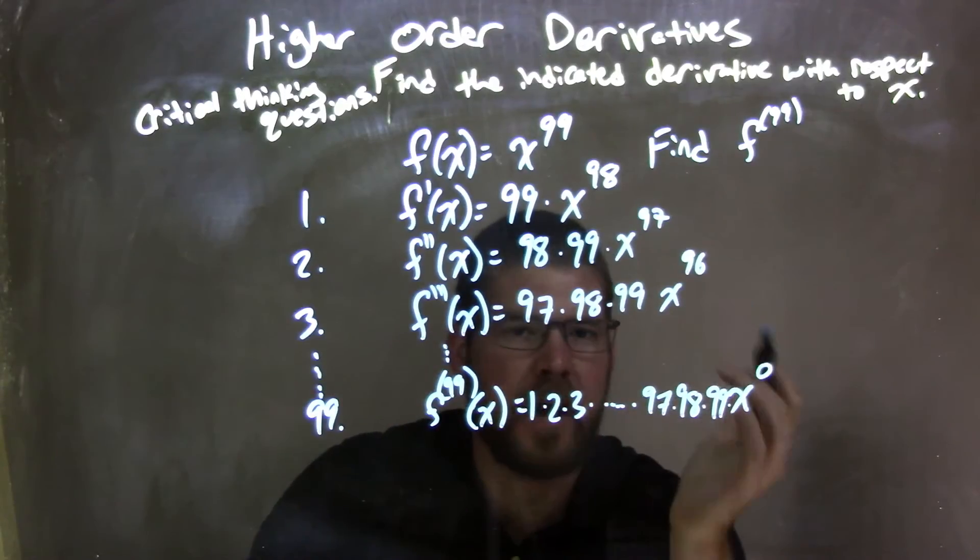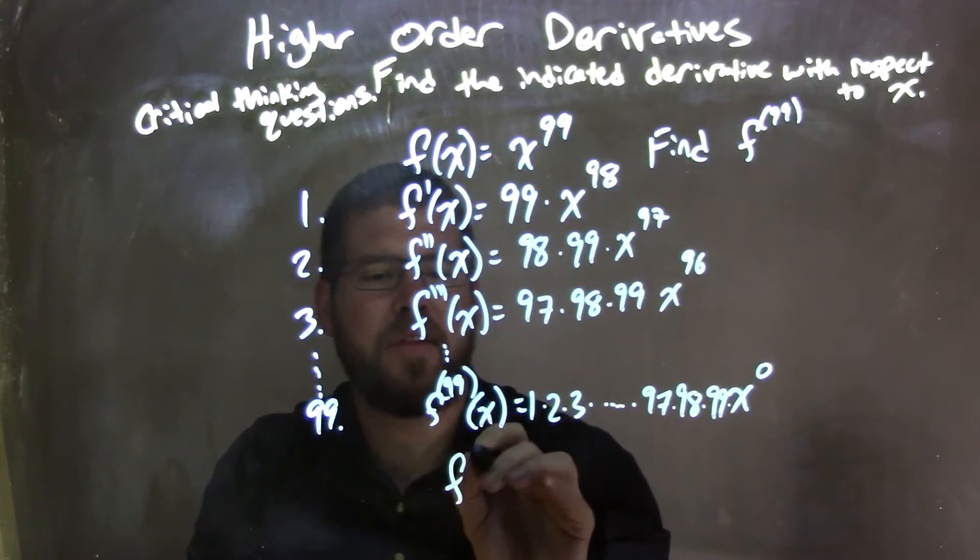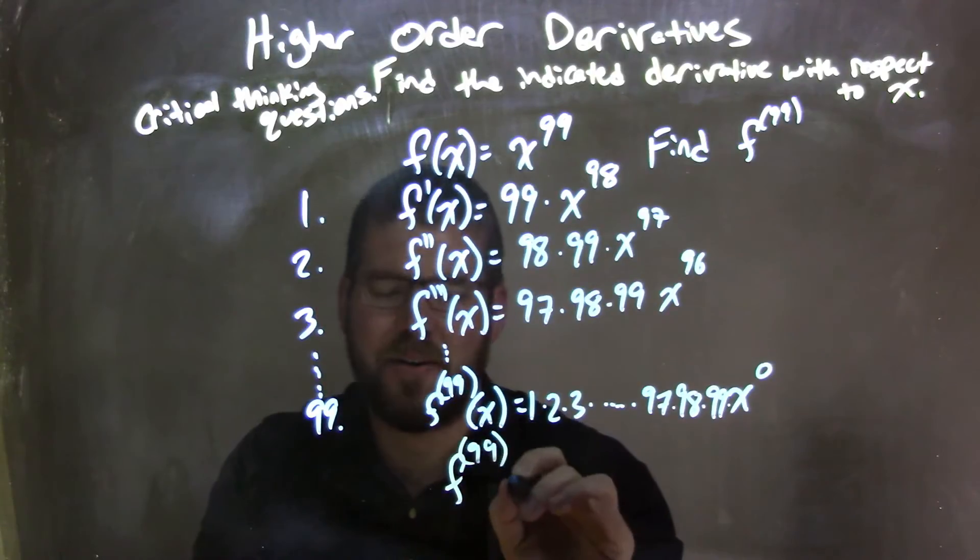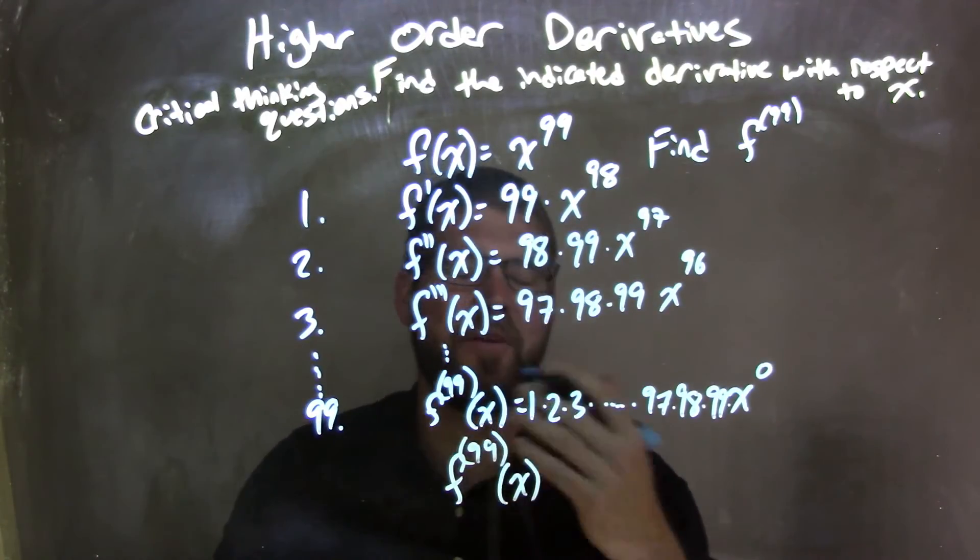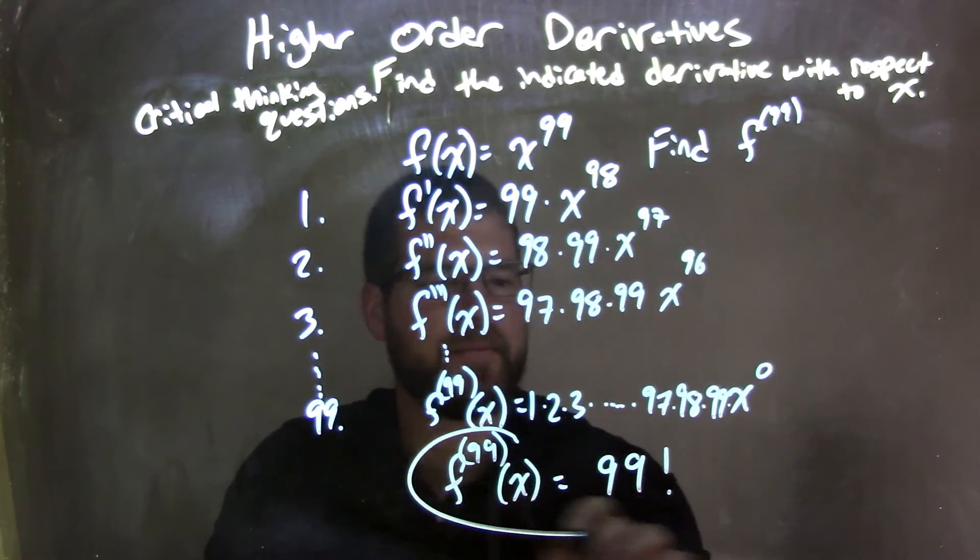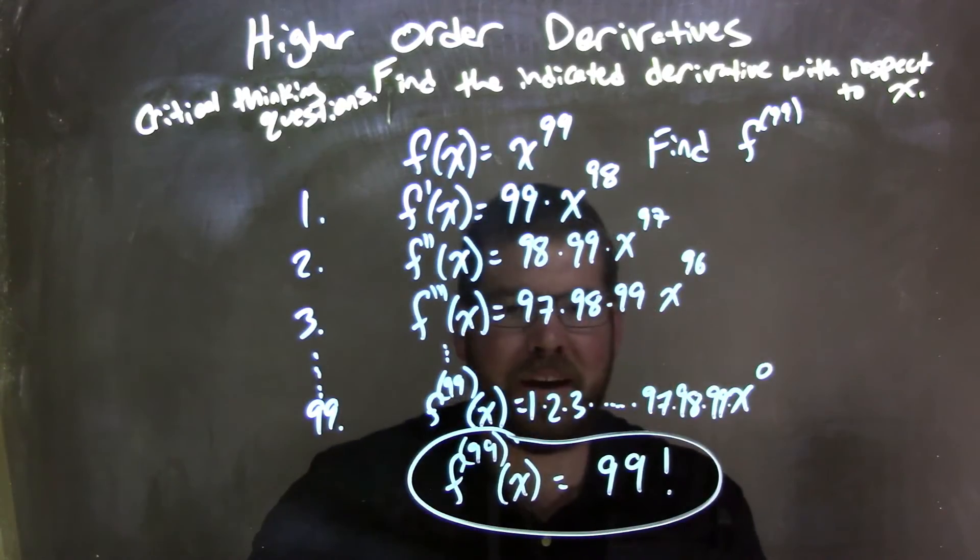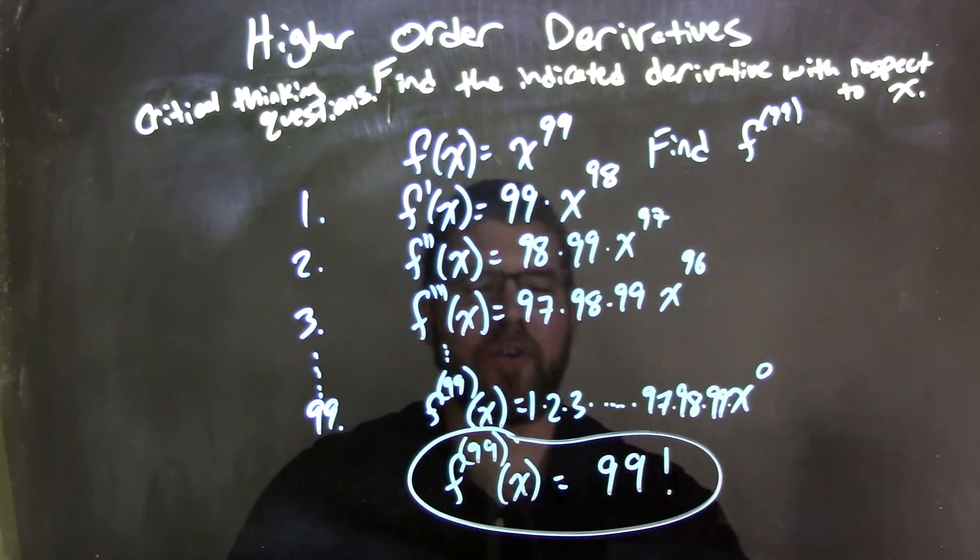Isn't that the same as 99 factorial? And so we can rewrite our final answer here, f to the 99th derivative of f is 99 factorial. And there we have it, some large number, whatever 99 factorial is, and there's our answer.